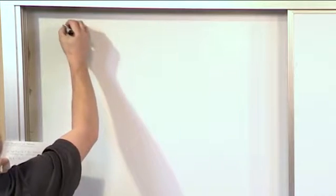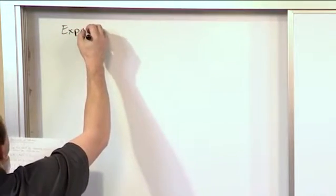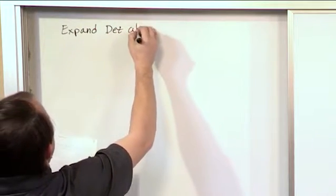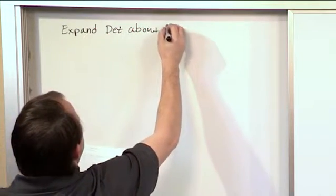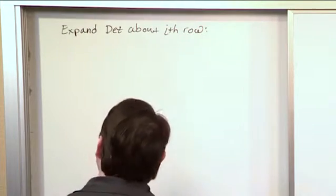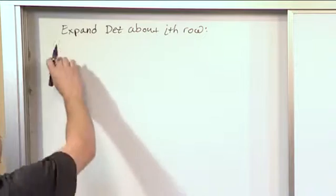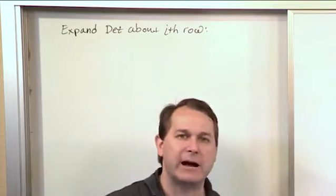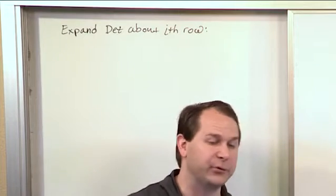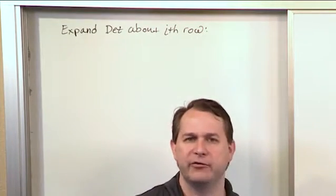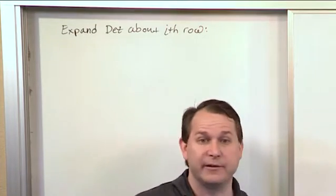So let's say we're going to expand the determinant about the ith row. About the ith row or through the ith row, however you want to write that. And I shudder to write this down because it's not terribly clear. But part of the challenge of a linear algebra is for a student to chop through how the book is written and read the symbols and understand what it's trying to tell you.